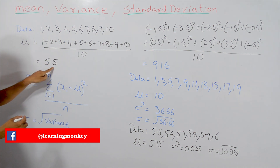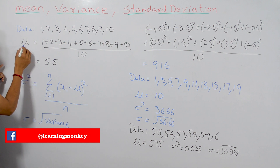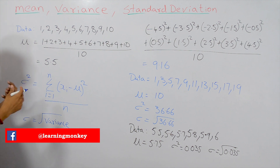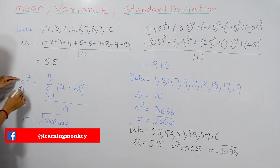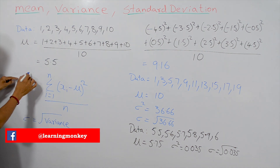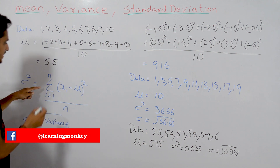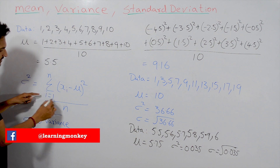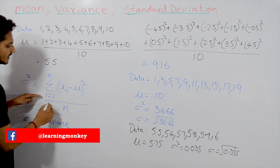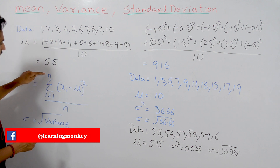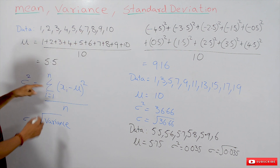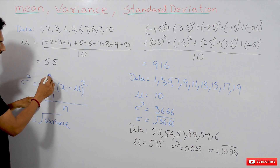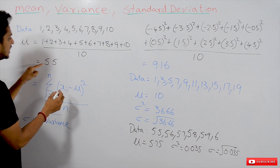The mean is equal to 5.5. Mean is represented by the symbol mu — from now onwards, mu means the mean value. Coming to variance: variance is symbolically represented as sigma squared. Variance is calculated using the formula: summation from i equals 1 to n of (x_i minus mu) squared, divided by n, where n is the number of data points — here n equals 10.